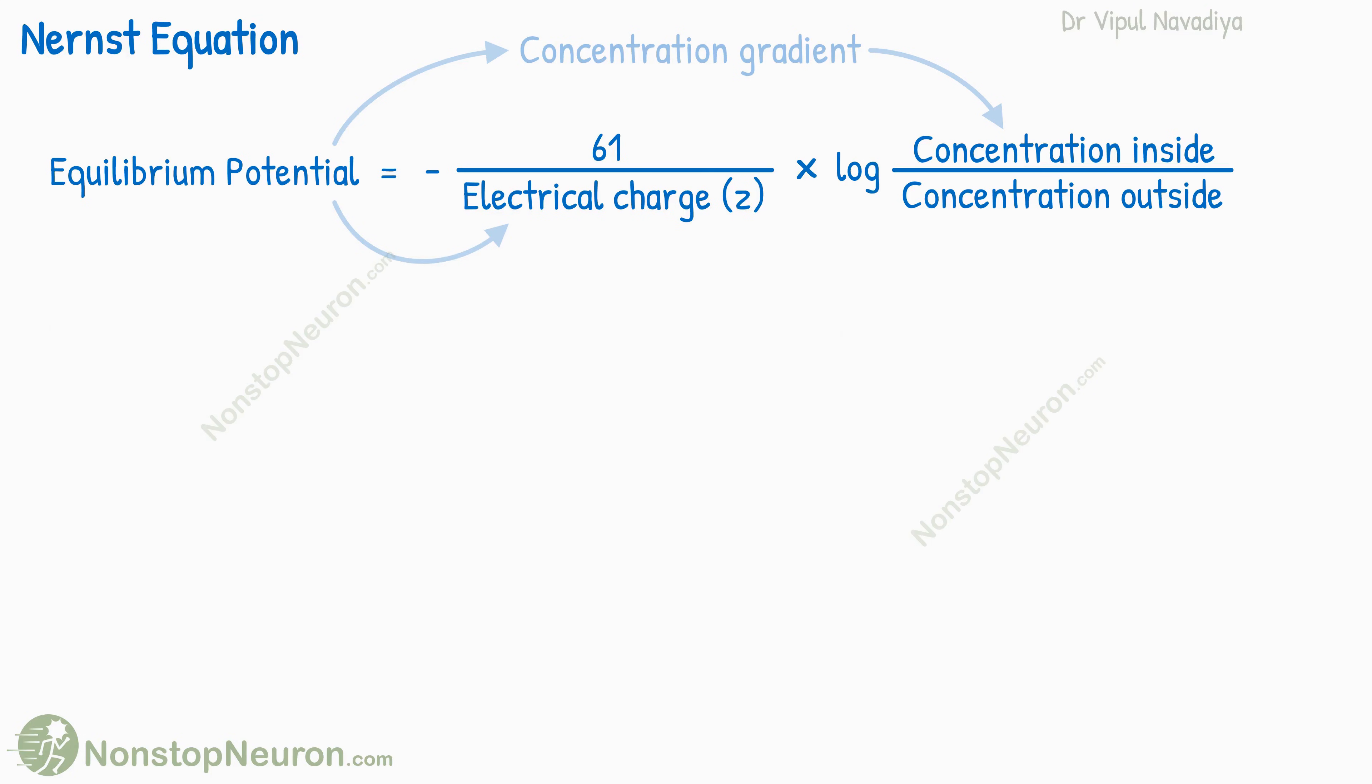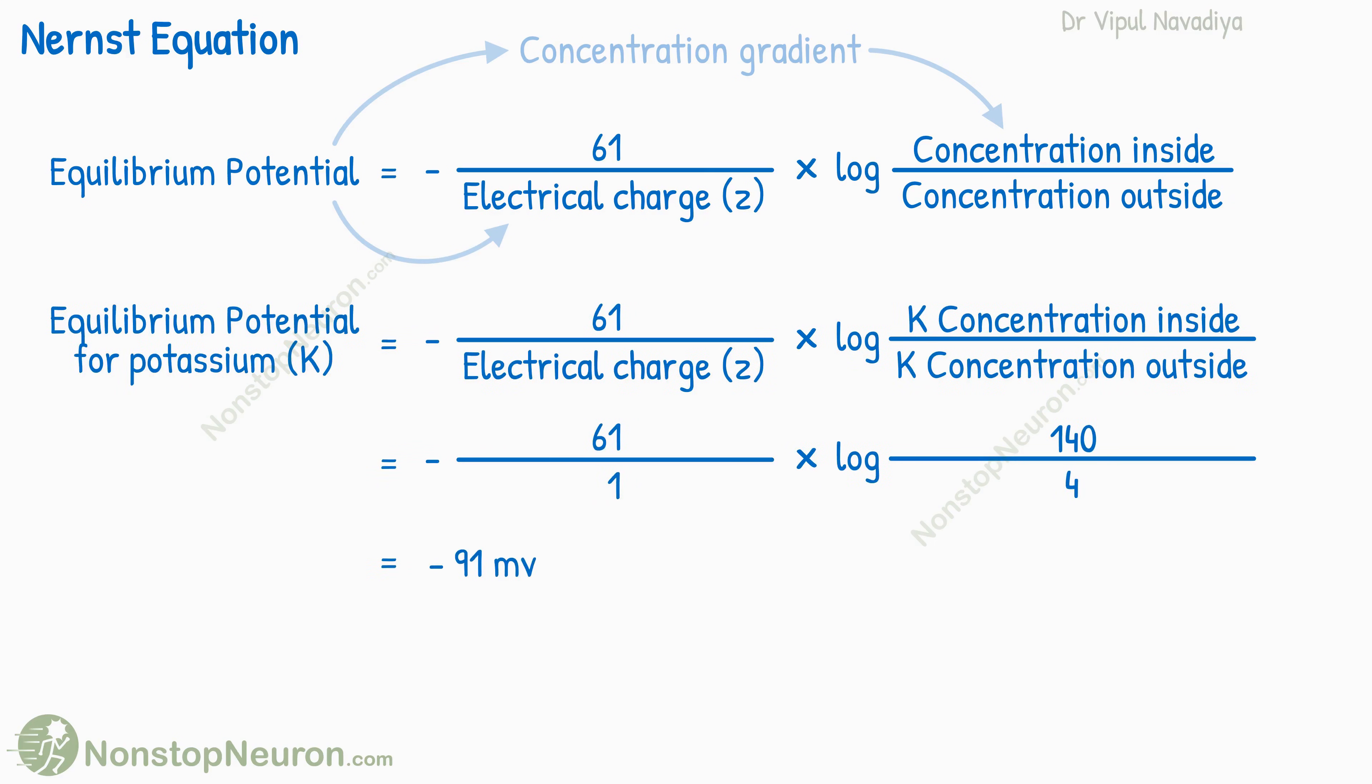The equilibrium potential is equal to minus 61, divided by the electrical charge on the ion, multiplied by log concentration inside by concentration outside. If you put the values of concentrations and electrical charge of any ion, you get the potential required to balance the movement of that ion.